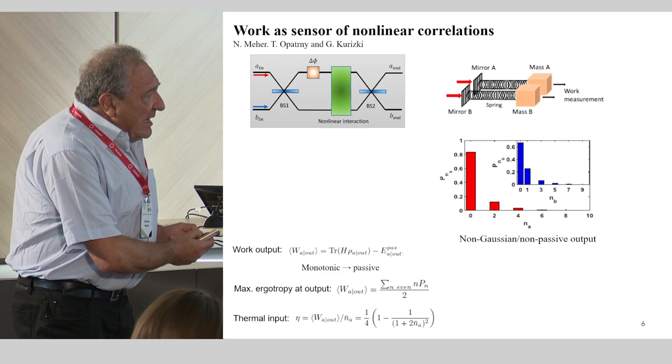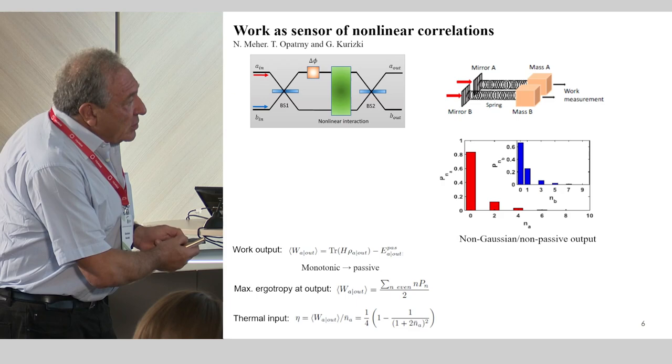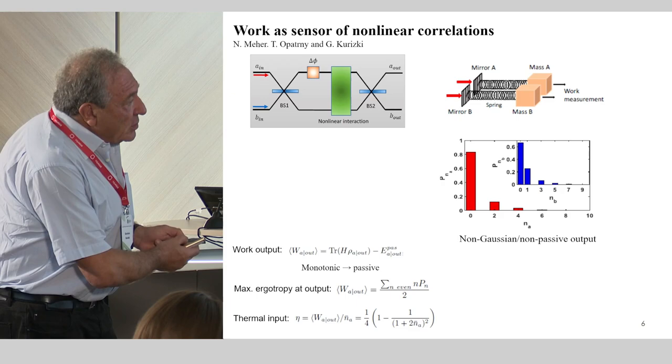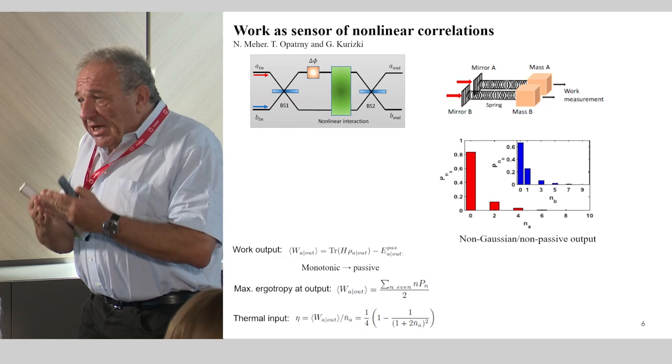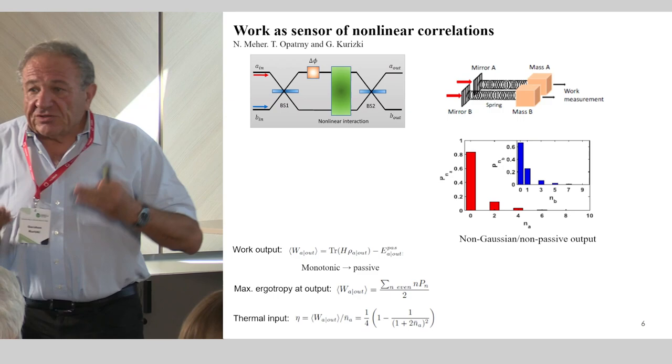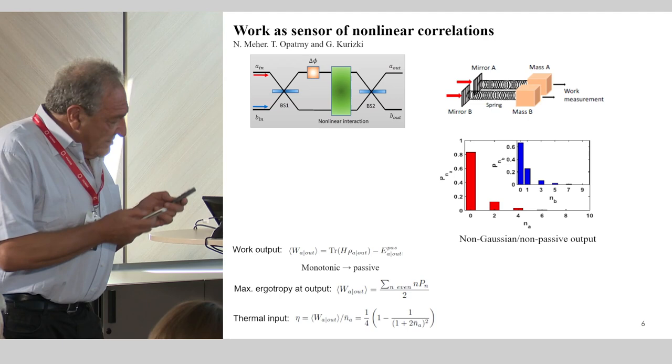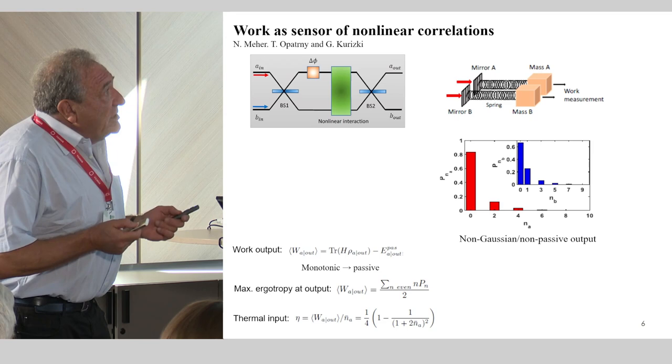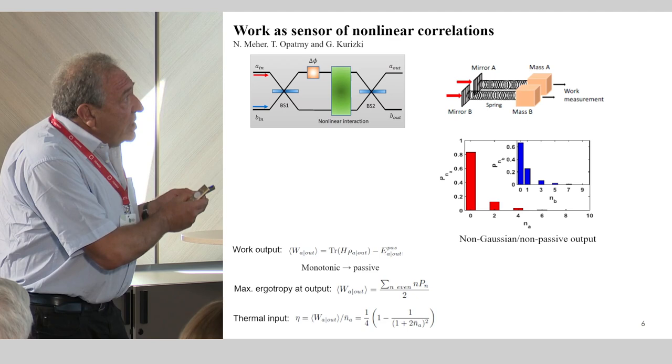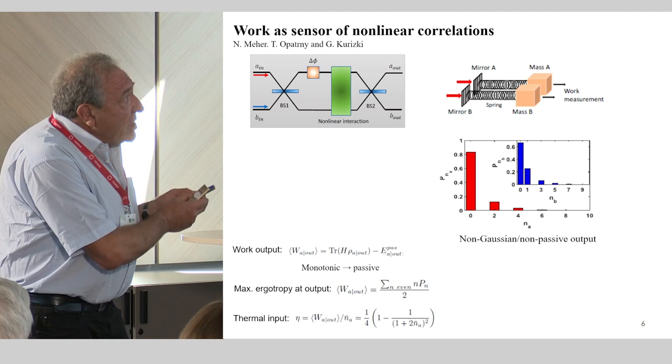As a result, if you calculate the work efficiency, the ratio of the work output to the heat input, you find that it tends to one quarter in the limit of large intensity. Why one quarter? Because the other quarter goes to heat extraction and together they constitute 50% of the output, whereas the other mode accounts for the other 50%. This is the best you can do with this setup in terms of work extraction. But what is important is that here I don't have to look at correlations of output modes, only at individual work outputs of each of them.